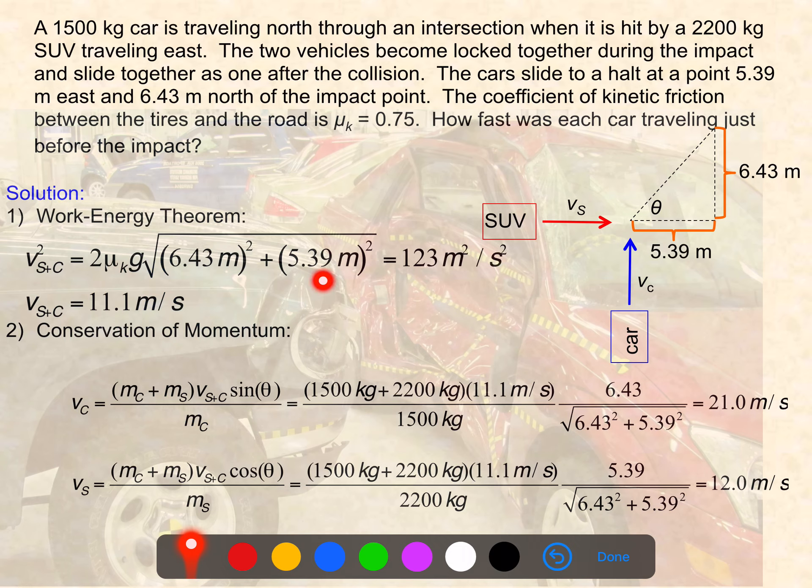Plugging in the numbers here, we find a combined velocity after the collision of 11.1 meters per second. We can use that now to plug into each of these expressions that we got from the conservation of momentum application in the x direction and the y direction. And then we're able to conclude that the car was moving 21 meters per second while the SUV was moving 12 meters per second. So the car was flying through this intersection whereas the SUV was going less than half of the speed.